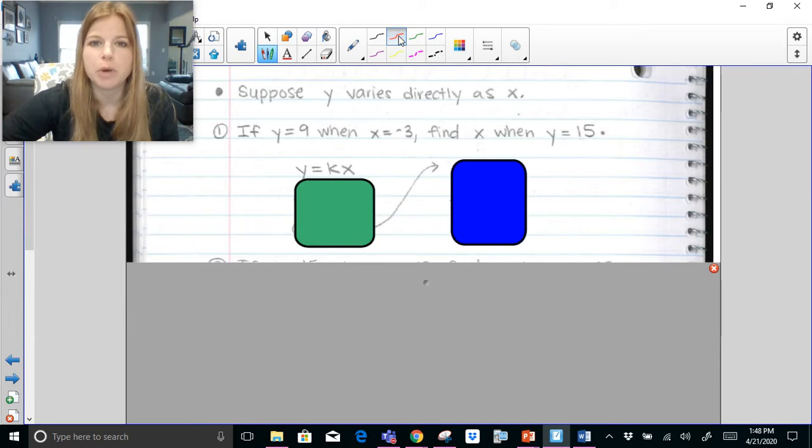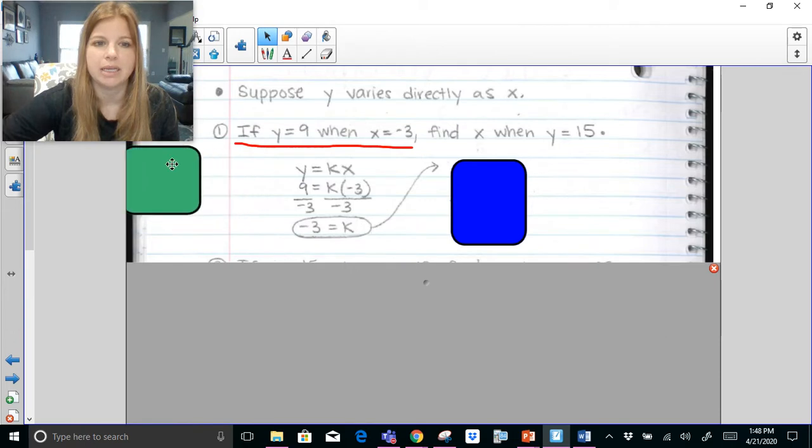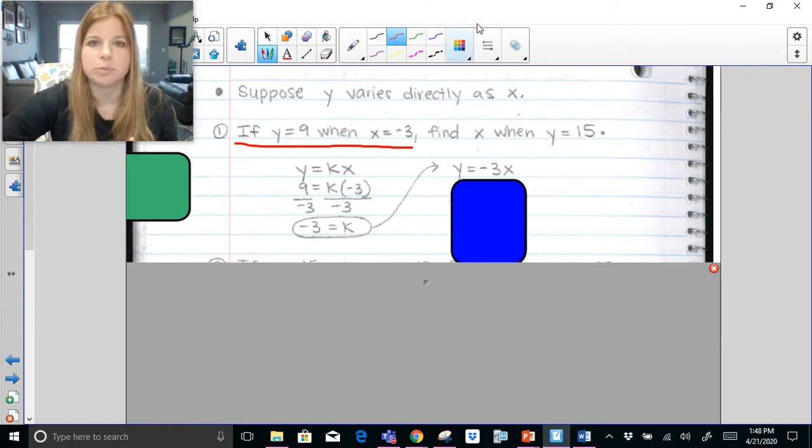We use the first part of the problem. So it says if y equals 9 when x equals negative 3. Go ahead and we substitute those values in. We plug in a 9 for the y and we plug in an x for the negative 3. And we do this to solve for k. And if I divide both sides by negative 3, I end up getting k equals negative 3. That lets me then write my equation. My equation is y equals negative 3x.